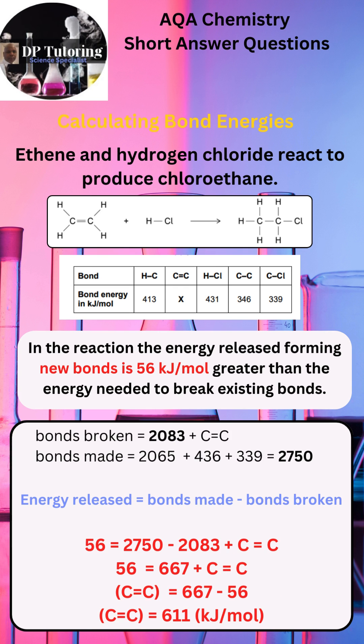The final step is to calculate the carbon-carbon double bond value. To do so, you will need to find the amount of energy released, which is equal to bonds made minus bonds broken. You also need to remember from the statement given by AQA that 56 kilojoules were also released when bonds were made. The final answer is on the screen.